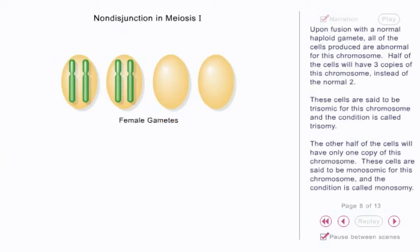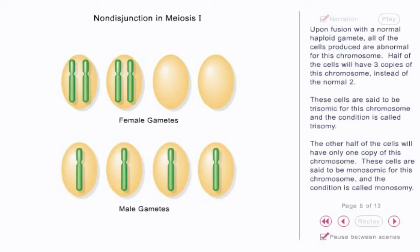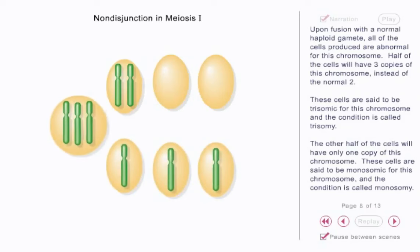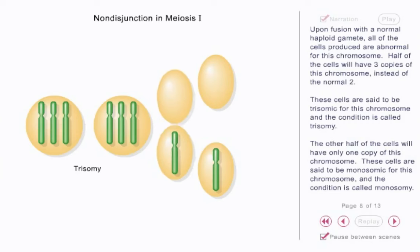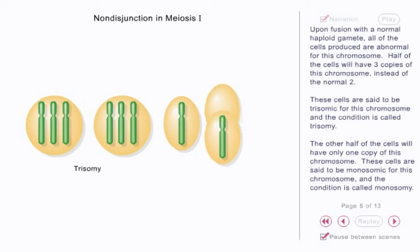Upon fusion with a normal haploid gamete, all of the cells produced are abnormal for this chromosome. Half of the cells will have three copies of this chromosome instead of the normal two — these cells are said to be trisomic, and the condition is called trisomy. The other half will have only one copy — these cells are said to be monosomic, and the condition is called monosomy.